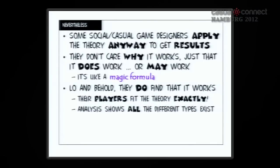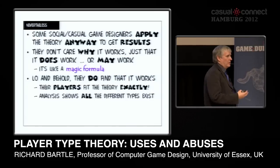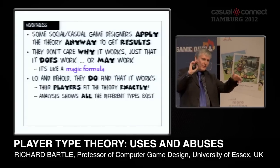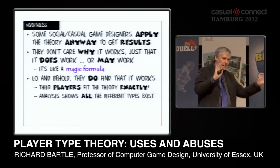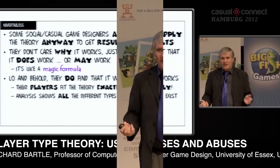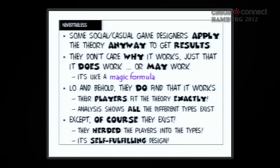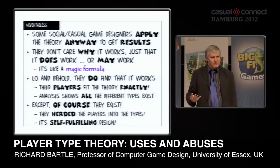When you apply player-type theory to casual or social games, you find that it does work. You create the content for these four particular types and marshal the people into the right types. Then you analyze it, give them questionnaires, and find, well, this is pretty good because we have indeed got four types of players. Except it doesn't really work — because you just herded them into those. If you create something with only four types of content and throw people at it, you're only going to get people who like those four types. All it means is you're good at herding people into four types.